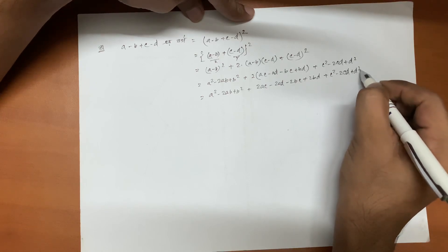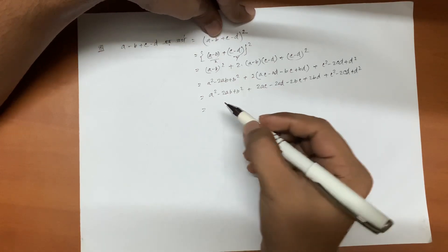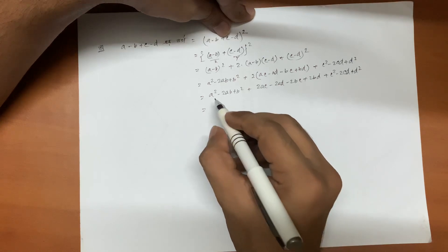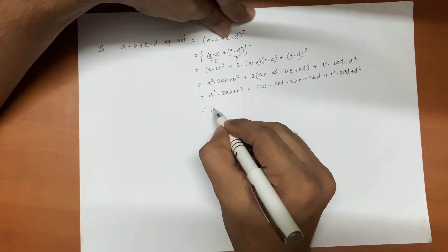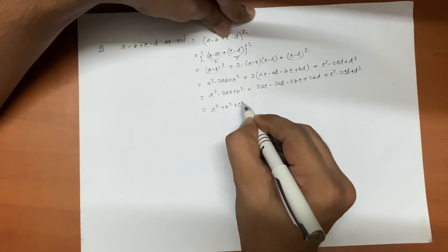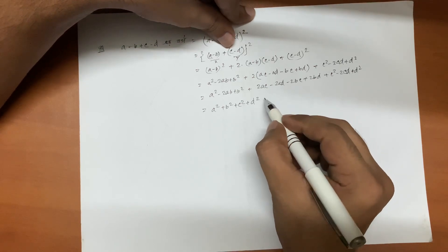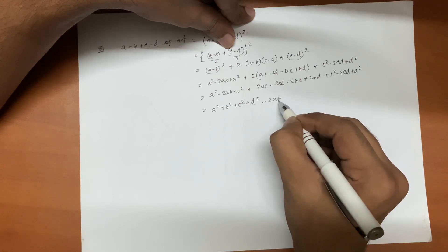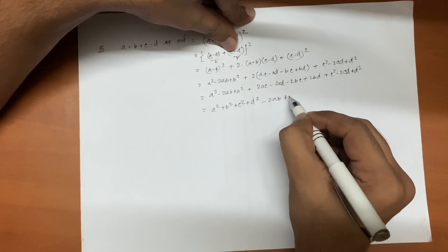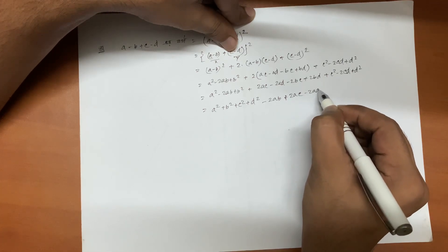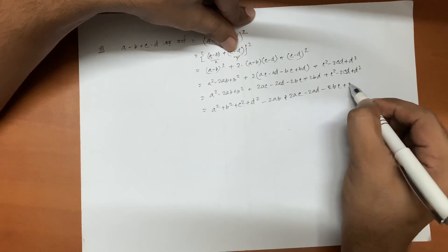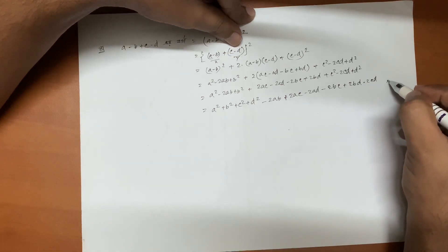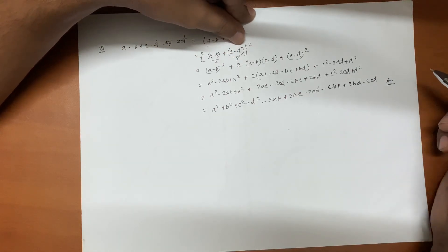Then: a square minus 2ab plus b square plus 2ac minus 2ad minus 2bc plus 2bd plus c square minus 2cd plus d square. Plus 2bd minus 2cd, this is the answer.